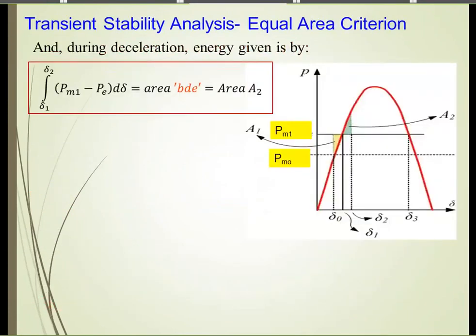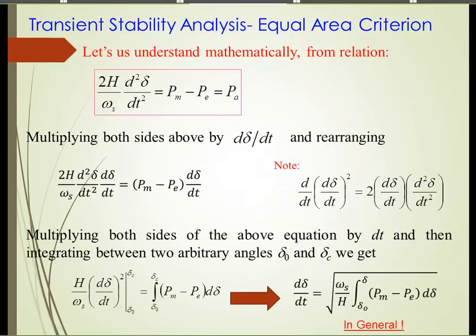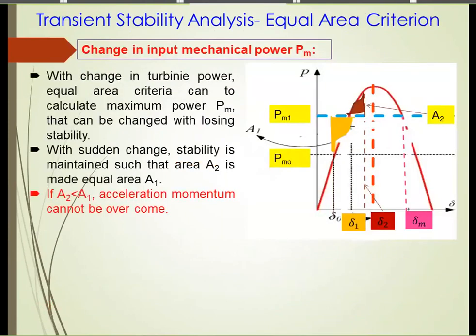Referring to the previous slide, the initial operating point was P_M0 and we changed the turbine mechanical power to P_M1. Someone asked that when we have the integral, it looks like the area is rectangular. My response was that it can be rectangular for the linear part of the P-delta characteristic, depending on the initial and new operating points. But if the change is toward the non-linear part, the area may not be exactly rectangular.